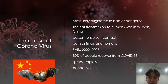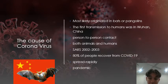The new coronavirus has spread rapidly in many parts of the world. On March 11, 2020, the World Health Organization declared COVID-19 to be a pandemic. A pandemic occurs when a disease that people are not immune to spreads across large regions.